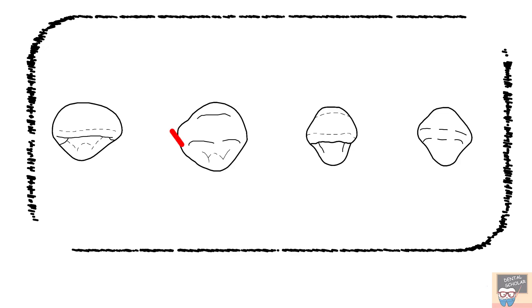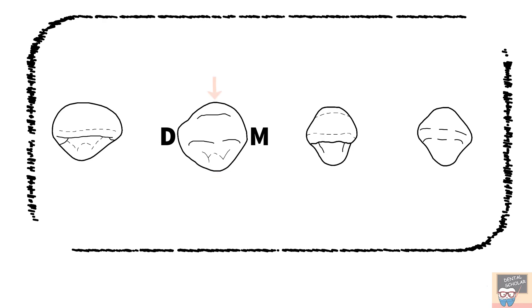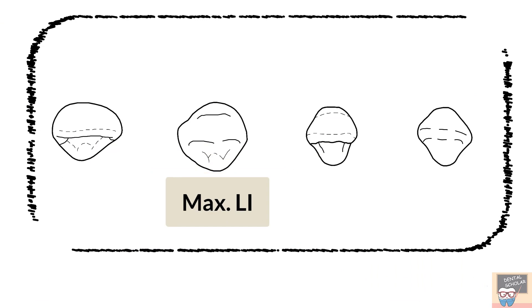In the second diagram, the tooth appears almost rhomboid with mesiodistal dimension almost equal to the faciolingual dimension. The cingulum appears more prominent than the maxillary central incisor and also appears roughly at the center mesiodistally. The labial surface also exhibits greater convexity as compared to the central incisor and has a notch on the distal side. The crown appears more bulky on the mesial side. So all these features will help you identify the maxillary lateral incisor.